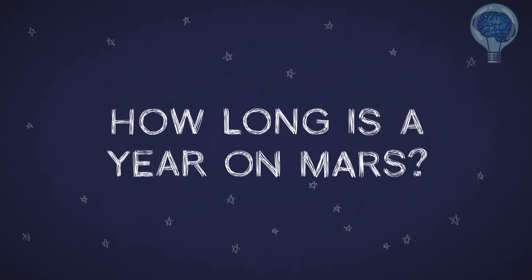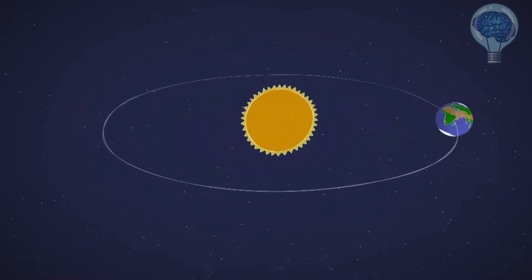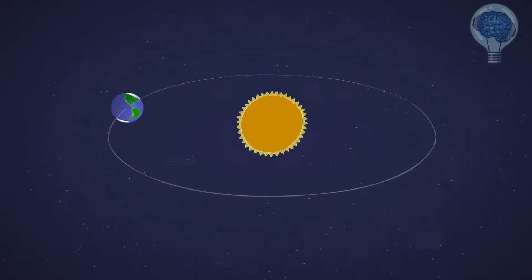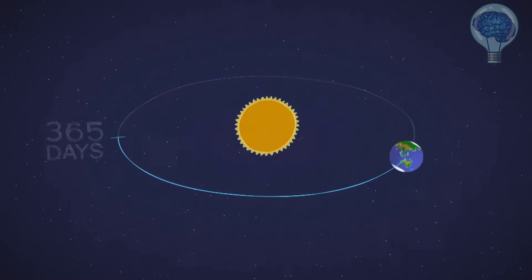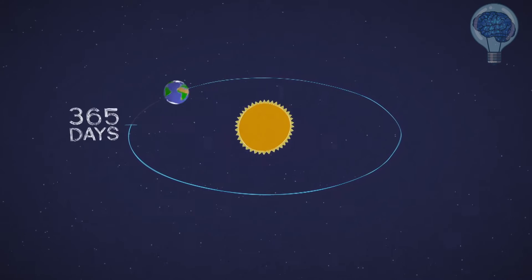How long is a year on Mars? The Earth zips around the Sun at about 67,000 miles per hour, making a full revolution in about 365 days, one year on Earth.